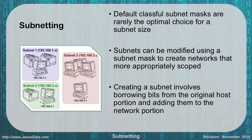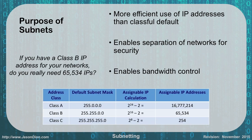This allows us to create subnets by borrowing bits from the original host portion and adding them to our network portion. This is why the conversion from decimal to binary and binary to decimal becomes important. The whole purpose of subnetting is to have a more efficient use of IP addresses than the classful default, enabling us to separate networks for security and provide better bandwidth control and quality of service.